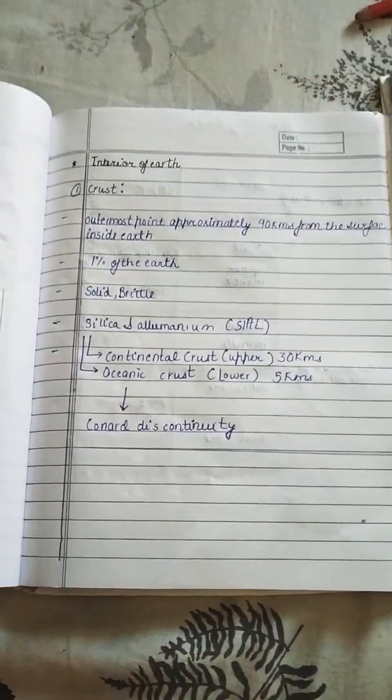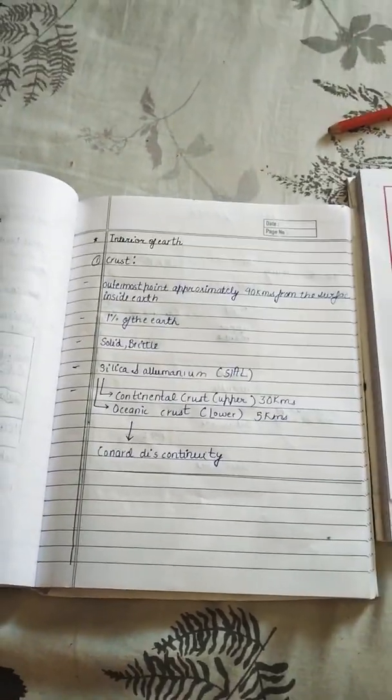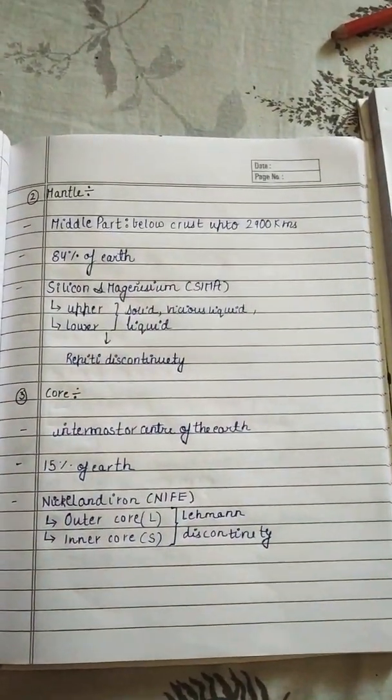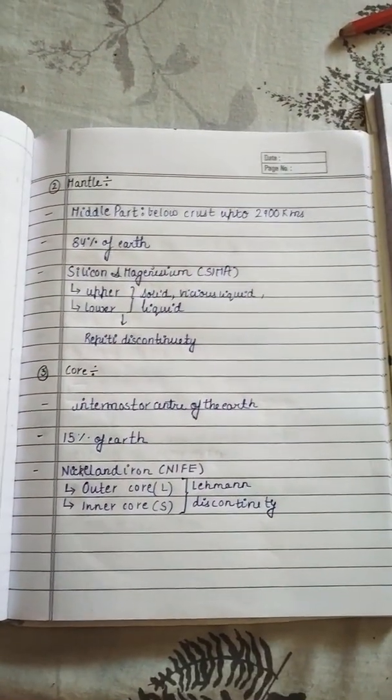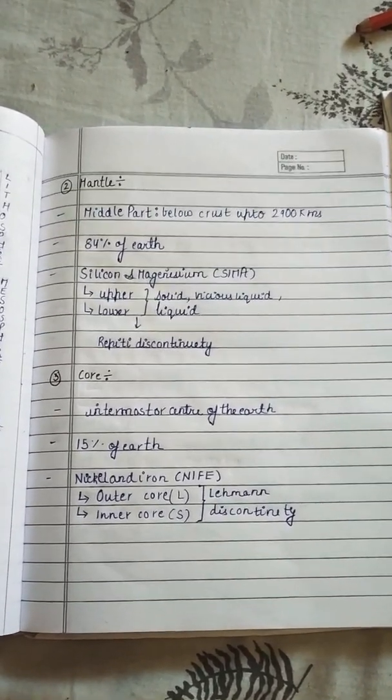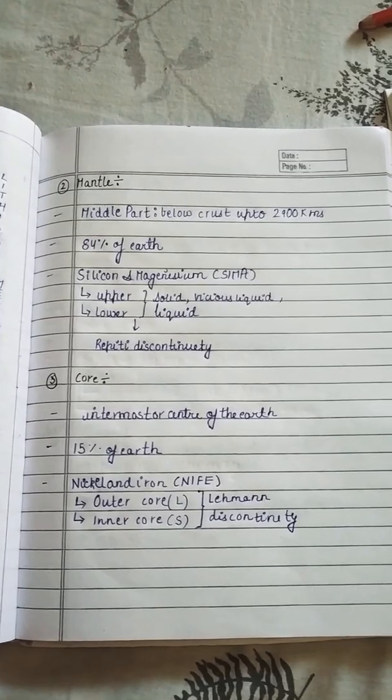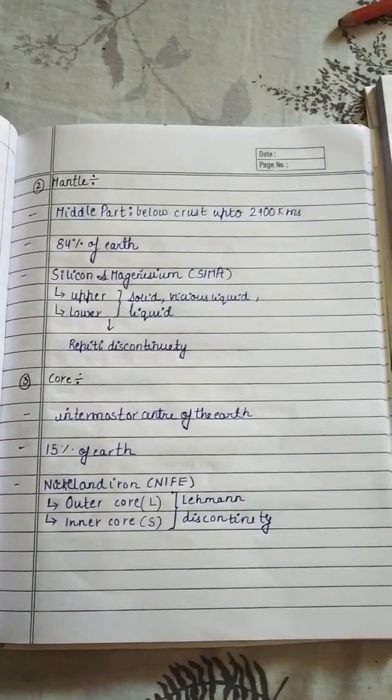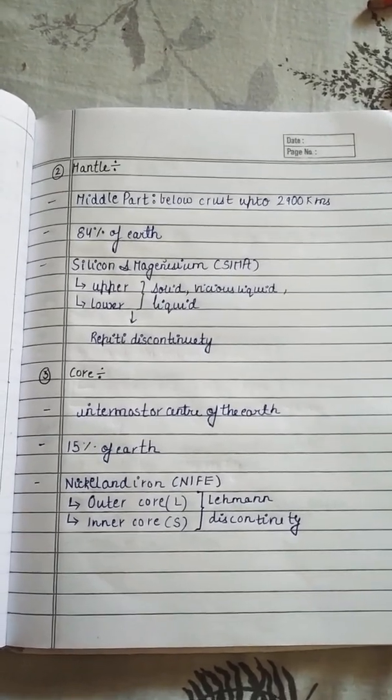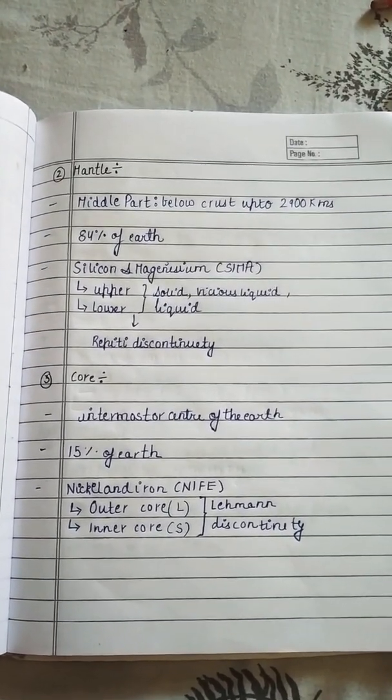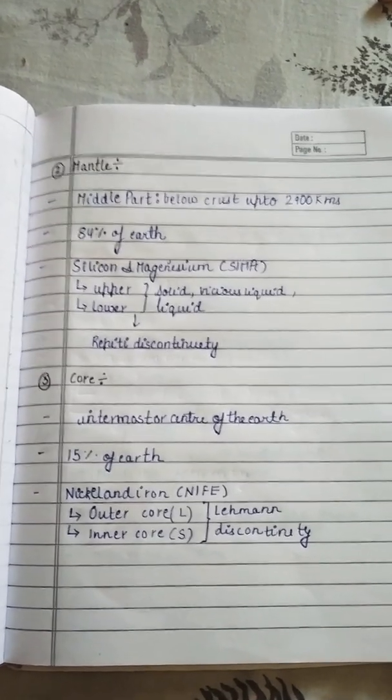So we move to another topic, that is mantle. Mantle part below crust up to 2,900 kilometers. It consists of 84% of the Earth, made of silicon and magnesium. Upper part is solid, viscous liquid. Lower part is liquid. Repetti discontinuity.